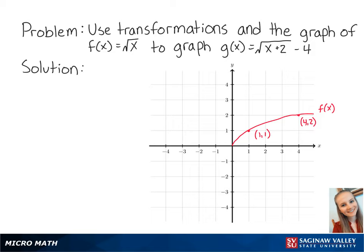For this problem, we want to use transformations and the graph of f of x equals the square root of x to graph g of x equals the square root of x plus 2 minus 4. g of x is equal to f of x plus 2 minus 4.